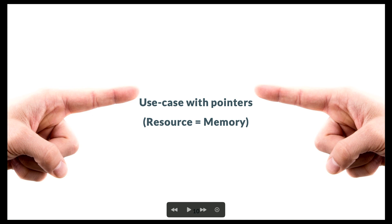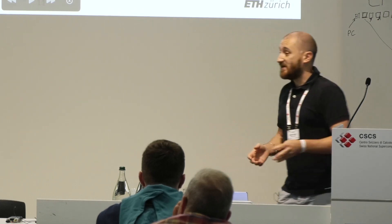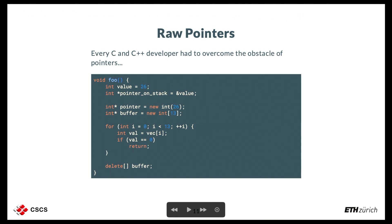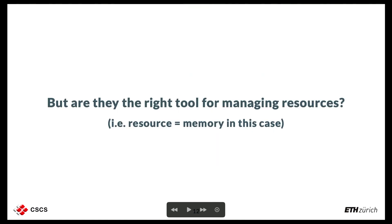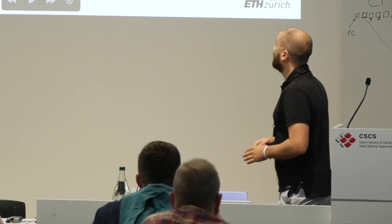Memory is the most simple resource we can think of because we all deal with it. Every C and C++ developer has certainly had to deal with pointers. Usually you allocate some memory, keep its address in a pointer, use it, and in the end you deallocate it because you don't want memory leaks. But the question we have to ask ourselves is: are raw pointers the right tools to manage the memory resource?